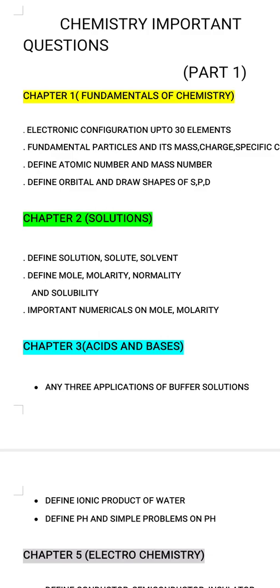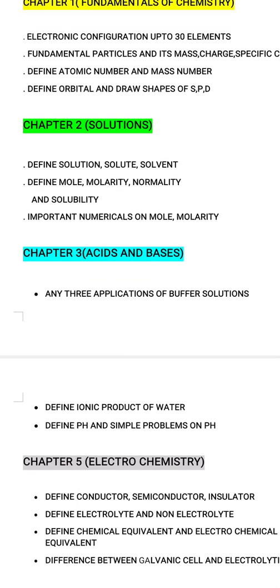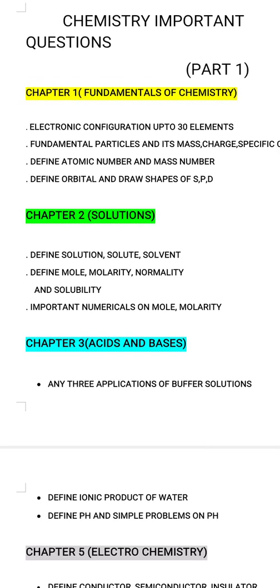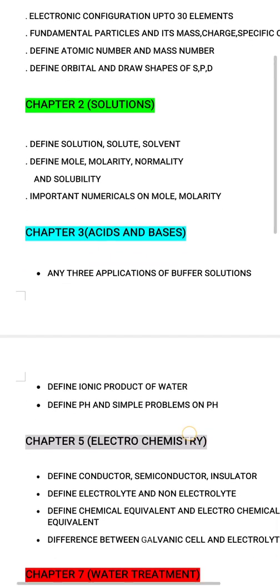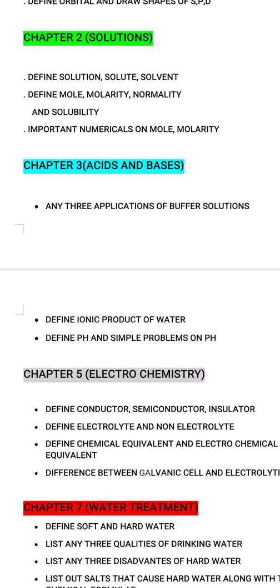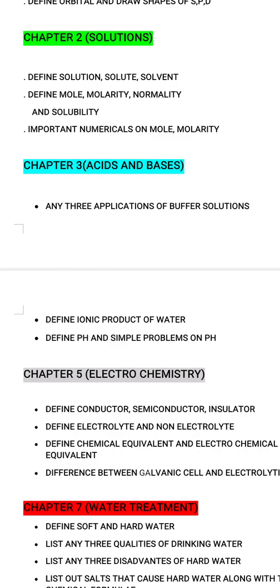Important numerical problems include mole and molarity. There are three or four formulas you can use. Moving to Chapter 3: acids and bases. Important questions are applications of buffer solutions, ionic product of water, define pH, and simple problems on pH. The pH formula is: negative log of hydrogen ion concentration, i.e., –log[H⁺].